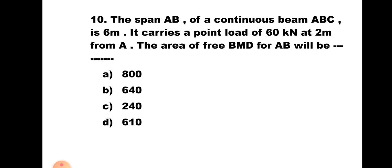Question number 10. The span AB of a continuous beam ABC is 6 meter. It carries a point load of 60 kilonewton at 2 meter from A. The area of free BMD for AB will be: A. 800, B. 640, C. 240, D. 610. The maximum positive bending moment is WAB/L. Put W = 60, A = 2, B = 4, L = 6. Since it is a triangle, area = ½ × base × height = ½ × L × (WAB/L). Calculating this gives 240. Hence the correct answer is C, 240.